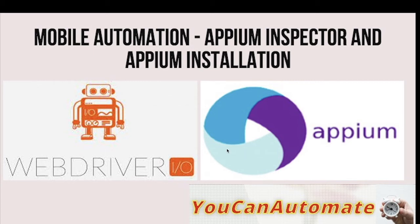Hello everyone, welcome back to 'You Can Automate'. In this session we are going to learn how to install Appium Inspector and Appium Server. Appium Inspector is required because, for example, if you are using Selenium and you want to inspect any web elements on a web page, you use dev tools to check attributes of the web element. Similarly, in mobile automation we have something called Appium Inspector, through which we will be able to inspect web elements on mobile devices.